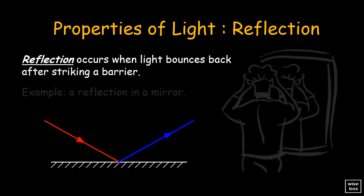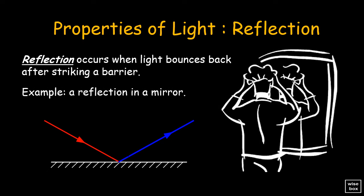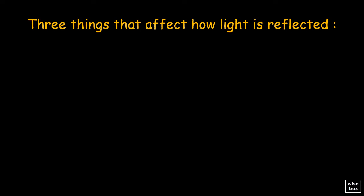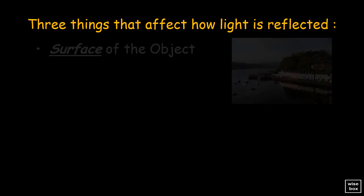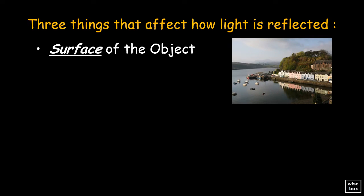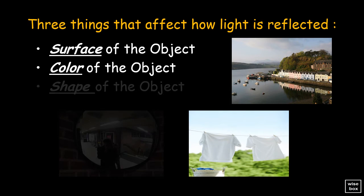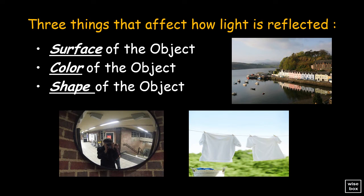One good example is reflection in a mirror. Here are the three things that affect how light is reflected: the surface of the object, the color of the object, and the shape of the object.